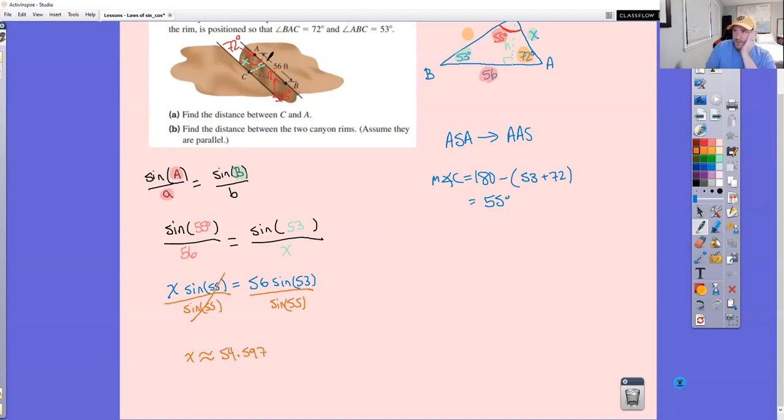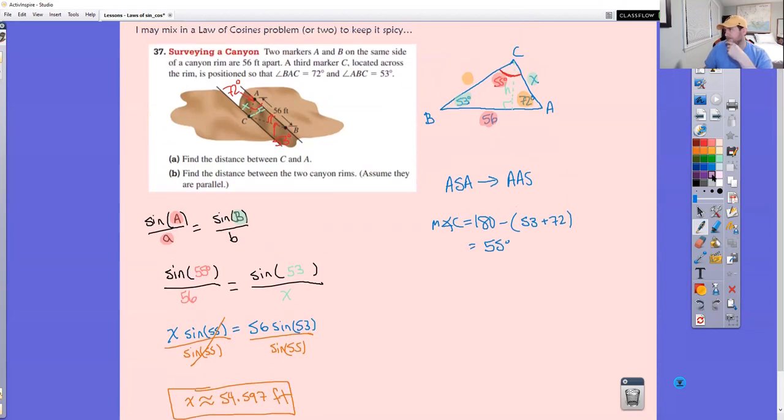And again, since this is supposed to be modeling a real world application, you do want to include units in your answer. These are feet. But now we also wanted this height. And to find that height is a piece of cake because that height, when it drops down, it carves out of this triangle, a right triangle. So we don't need the law of sines or the law of cosines for this. We can use regular old basic right triangle trigonometry. If you pull out that right triangle, where we're after this height, we know this angle is 72 degrees, and we just found X, it was 54.597.